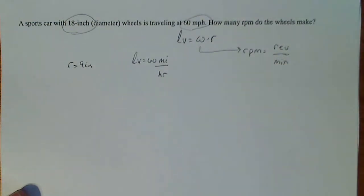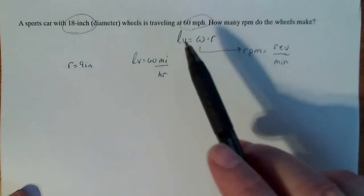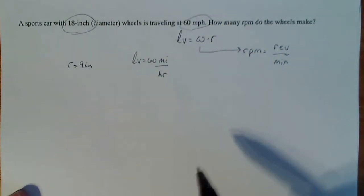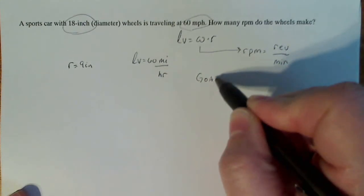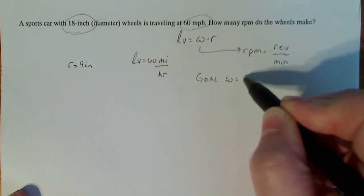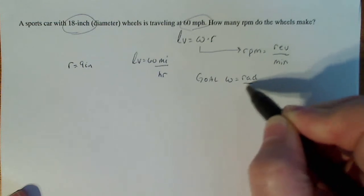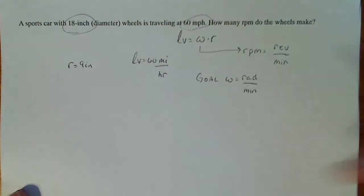And one revolution around a circle is 2π units. So if we have Omega, we can convert to RPMs. So our goal is to find Omega in terms of radian per minute. And once we got that, then we can get our RPMs.